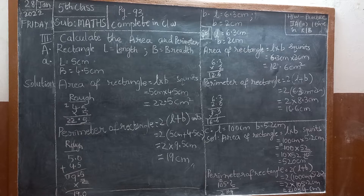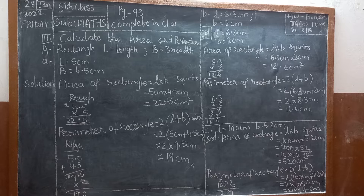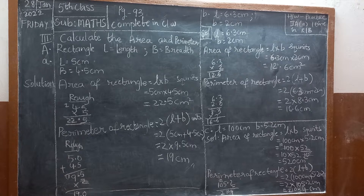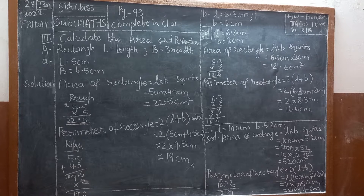I have written the work on the right side of the board. Practice third A is given only for practice, but parts B and C you also do, even if I don't mention. Complete everything in classwork. In a rectangle, we have length and breadth — length is indicated with L, breadth is indicated with B.